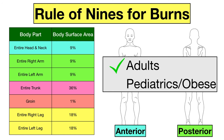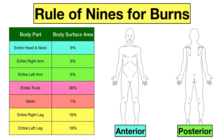The rule of nines is used in adult patients who are not obese. When it comes to pediatric and obese patients, the accuracy of the rule of nines can be affected, which we'll cover at the end. The table shows the percentages of entire body parts, so let's apply it to the front and back of the body — all we're going to do is divide each percentage in half.